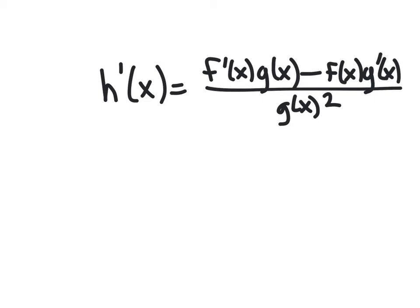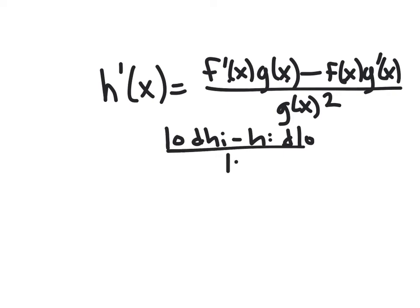A lot of people memorize this as 'low d high minus high d low' — where 'd' means derivative. 'Low' is the denominator times the derivative of the numerator ('d high'), minus 'high' (the numerator) times 'd low' (derivative of the denominator), all over 'low squared.'